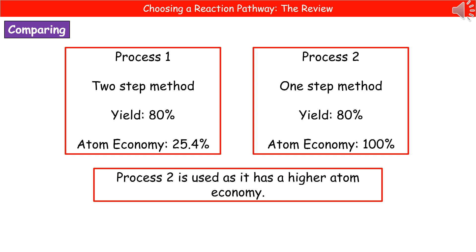Rather than just saying we use process two because it has a 100% atom economy, you've got to link it back to how that relates to process one. Adding that '-er' onto 'higher' makes all the difference — if you just said it has a 'high' atom economy, you'd get nothing; if you say it has a 'higher' atom economy, you get your mark. Don't forget to use those comparators to identify why one process is better than the other.